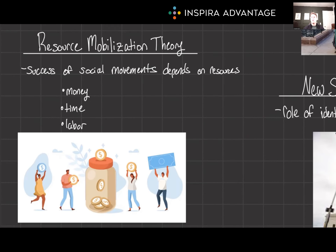Diving into the theories behind social movements, we begin with resource mobilization theory. This theory posits that the success of social movements largely depends on the ability to gather necessary resources, which can include money, labor, and the intangible yet crucial aspect of solidarity among members. It emphasizes the rational aspect of movement organization, arguing that access to resources allows a movement to mobilize effectively, strategize, and sustain its activities over time. This theory challenges earlier notions that social movements purely emerge from societal discontent, highlighting instead the strategic efforts behind mobilizing resources for social change.